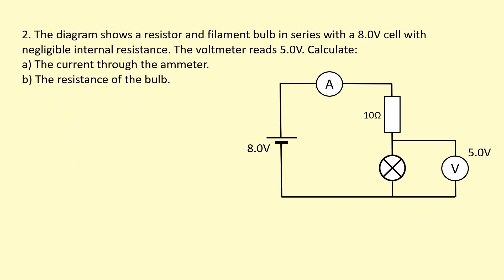The diagram shows a resistor and a filament bulb in series with an 8-volt cell with negligible internal resistance. The voltmeter reads 5 volts — calculate the current through the ammeter and the resistance of the bulb. So we know the bulb has 5 volts across it. Since the total is 8 volts, the resistor must have 3 volts across it. We can apply Ohm's law to the resistor: 3 divided by 10 gives a current of 0.3 amps.